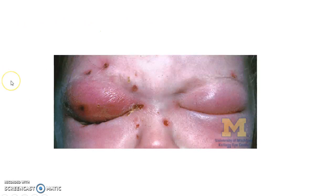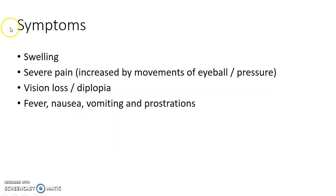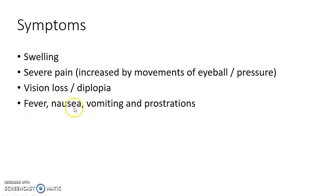This is how a patient with orbital cellulitis presents to you. The symptoms of orbital cellulitis include swelling, severe pain which is increased by movements of the eyeball or pressure, vision loss, and diplopia. There can also be general symptoms like fever, nausea, vomiting, and prostration, which is exhaustion of the body.